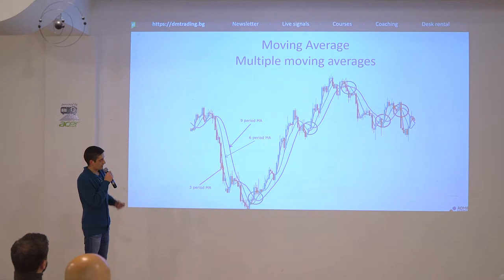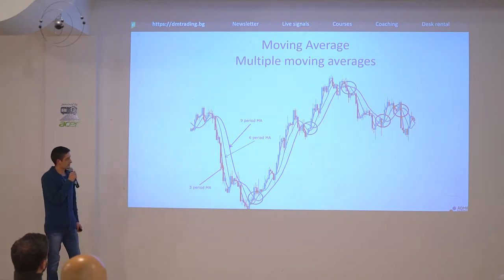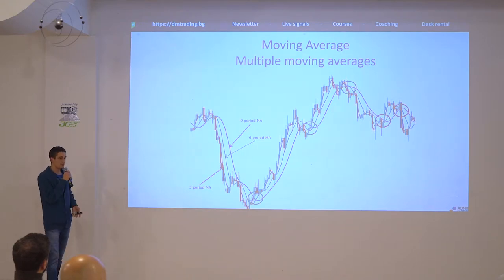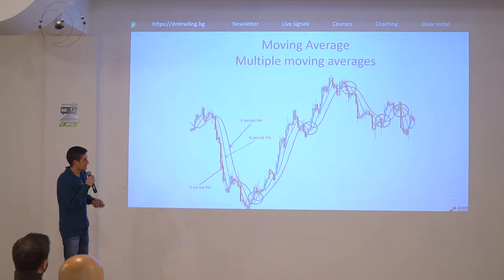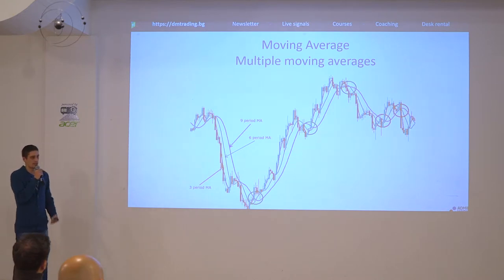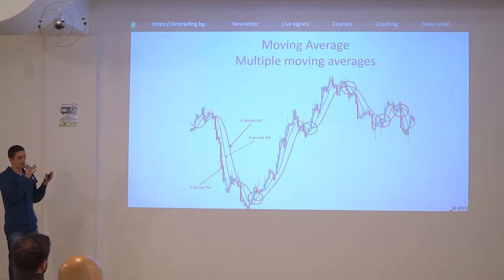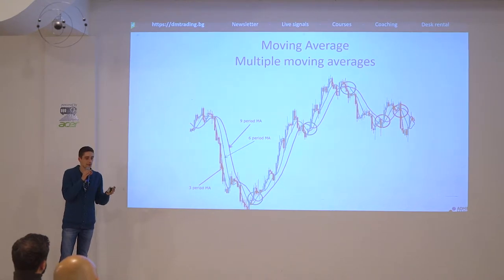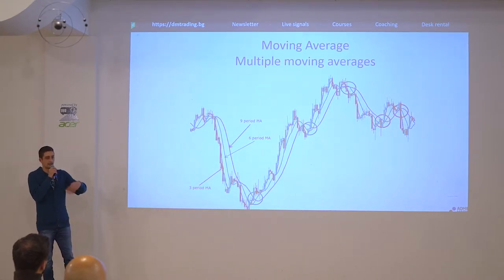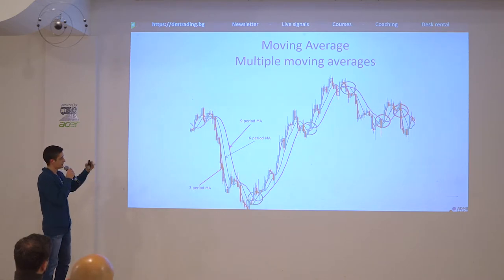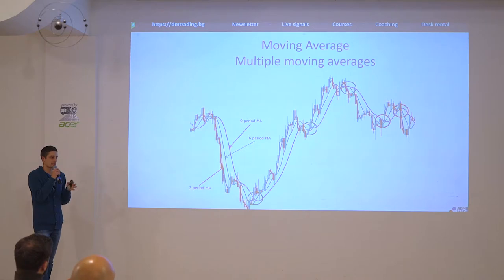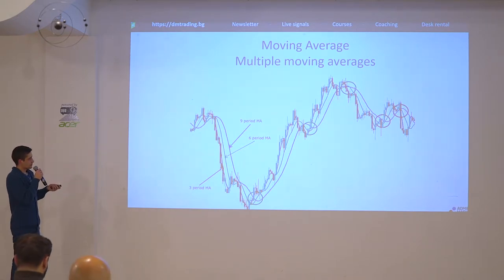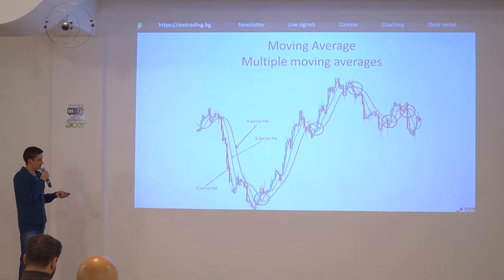Another strategy that you might find on the internet — I've tested it, it didn't work that well for me, but it can work for you, so you can try it — is using multiple moving averages. By doing so, it's basically like looking at three different time frames. For example, if you're looking at an overall downtrend on the H4, you can go down to the H1 where you might have an uptrend, and then go to the M15 timeframe where you might have a range.